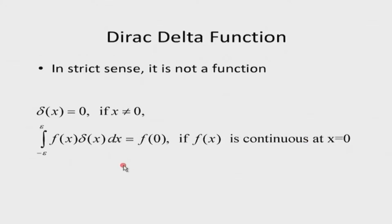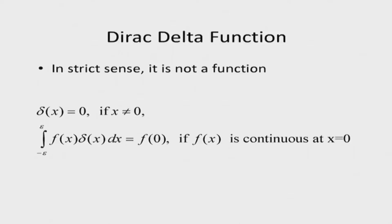You would ask why it is not a function in the proper sense. In the Riemann integral, there is a theorem: if a function is zero everywhere except at one point, then the area under that curve is zero, because the width of the rectangle it encloses is zero. But the delta function is such that its integral equals 1. You can look at the delta function as a limit of a sequence of functions.